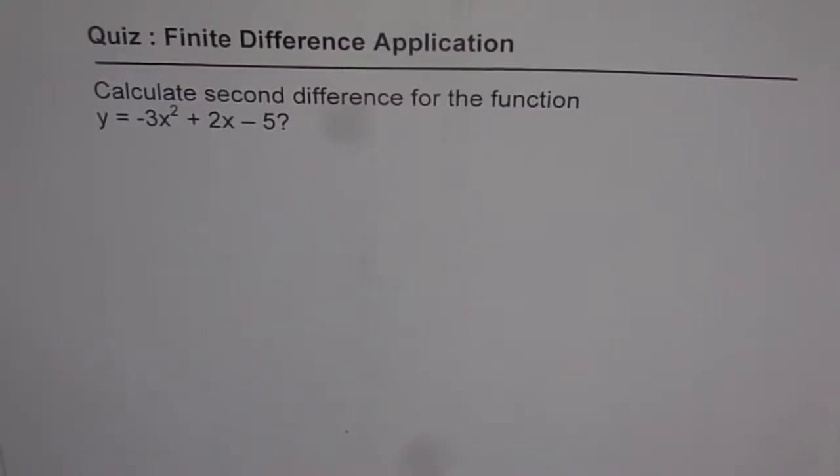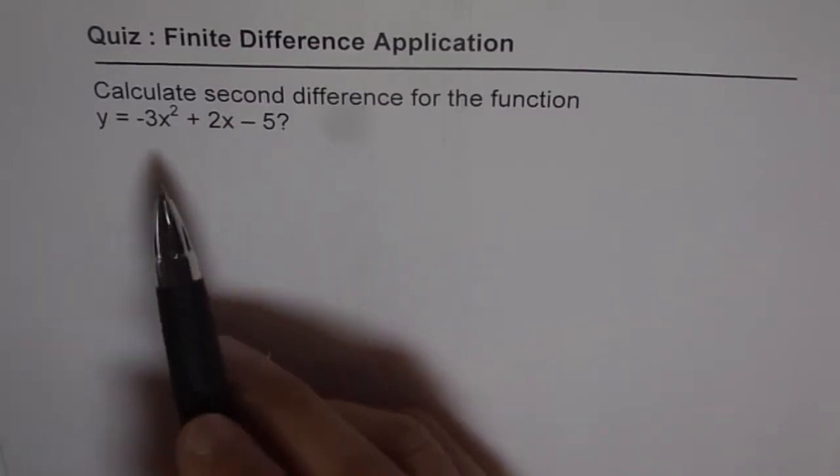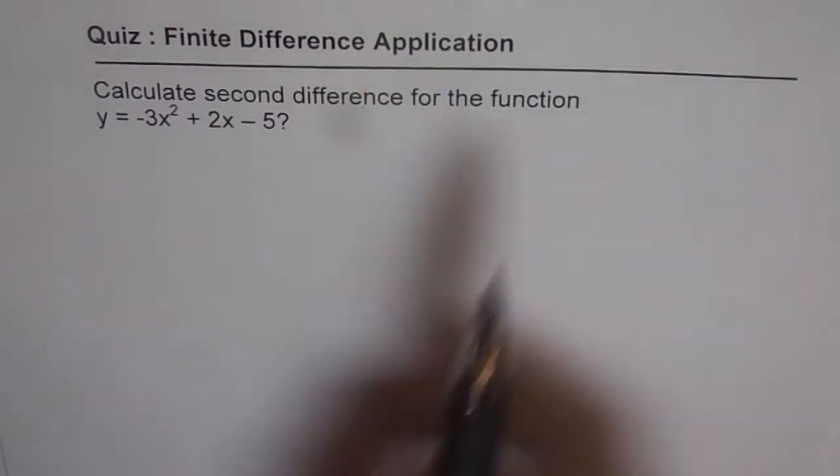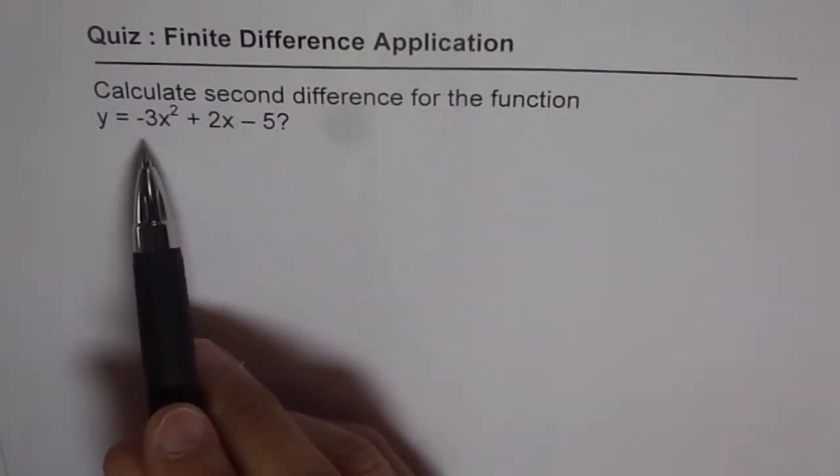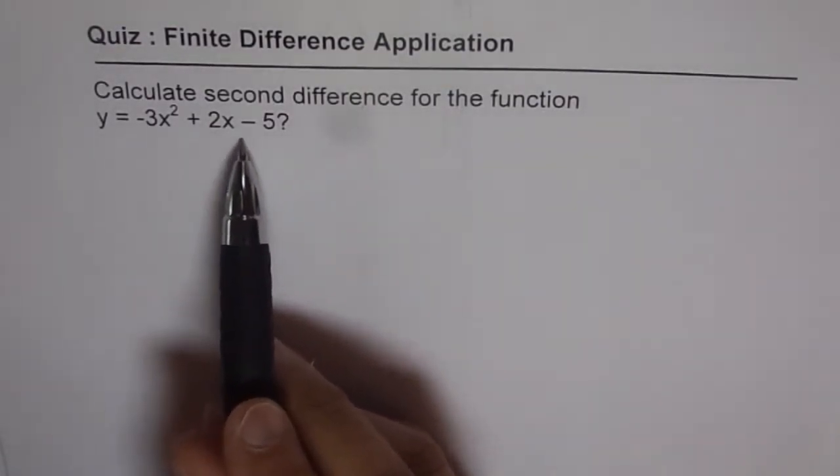You are on a journey to prepare for unit 3 test on quadratic functions with Anil Kumar, and here is question number 2. This is related to finite difference application which we treated in question 1. The question here is calculate second difference for the function y equals minus 3x squared plus 2x minus 5.